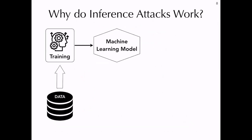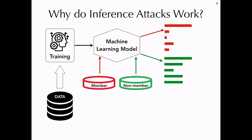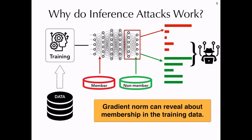Why do these inference attacks work? Surprisingly, machine learning models tend to behave differently on members — that is, records that are present in the training data — and non-members. An adversary with some background knowledge can learn to distinguish this behavior and identify if a particular record was present in the training set. In the case of neural networks, if the entire model is revealed, the parameters, and especially the gradient vectors with respect to the parameters in the last layer, reveal a lot of information about membership in the training data. This shows that machine learning models pose a huge privacy threat to the training data, bringing new challenges for data protection in AI regulation.